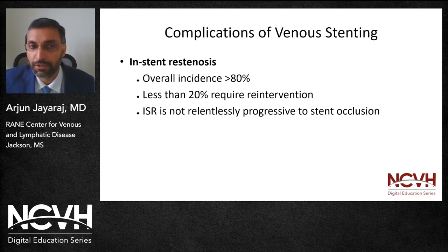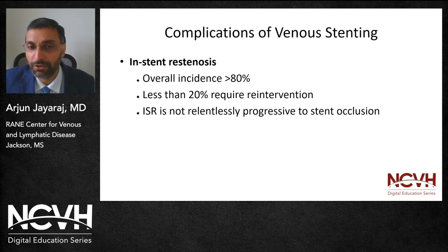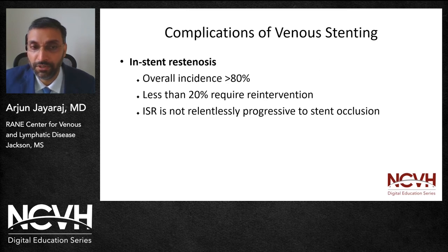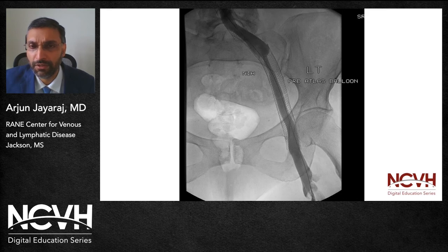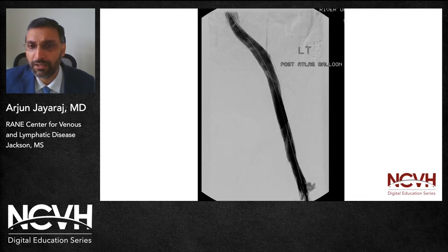As far as in-stent restenosis goes, it represents the most common reason for re-intervention following placement of a venous stent. The overall incidence is quite high; however, very few actually require re-intervention. It's important to remember that ISR is not relentlessly progressive to stent occlusion, and the mere presence of ISR does not warrant intervention. ISR has to be accompanied with recurrence of disabling clinical symptoms to warrant intervention. This is an example of severe in-stent restenosis managed with angioplasty using large caliber balloons — typically the same size or larger than the stent. At times even that doesn't work and you have to ablate the ISR using a laser catheter and then pursue repeat angioplasty.